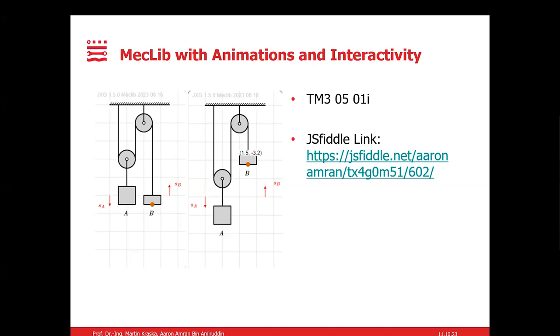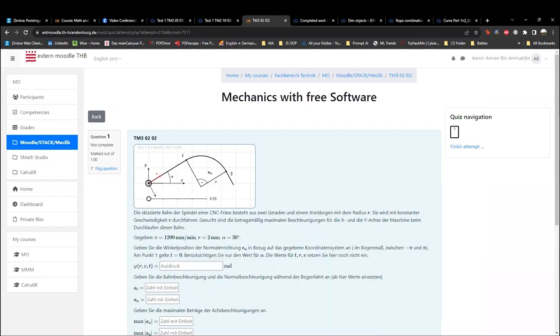Next slide please. Thank you Professor Kraska. Now I'll be explaining the first simple question we have decided to show. The first part shows a simple pulley system with mass A and mass B. This question is meant in such a way that only mass B is interactive, as denoted by the control points here. What this means is that when mass B is moved upwards, then mass A and the corresponding pulley will move downwards. The same thing happens vice versa. If mass B is pulled downwards, then mass A and the pulley system will move upwards. Now I would like to show the JSFiddle.